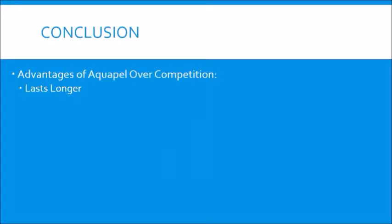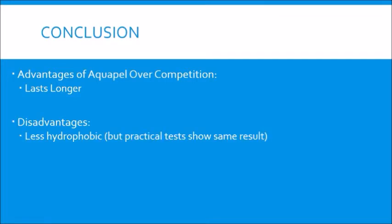In conclusion, Aquapel is probably one of the best products in the class of water repellent glass treatments, because it lasts much longer than the main competition, Rain-X. One of the main disadvantages of Aquapel, however, is that FAS is less hydrophobic than the PDMS used in Rain-X. However, even then, practical tests have shown that both products are effective at whisking away water from windshields at roughly the same speed. Therefore, Aquapel has a competitive place in the water repellent market.